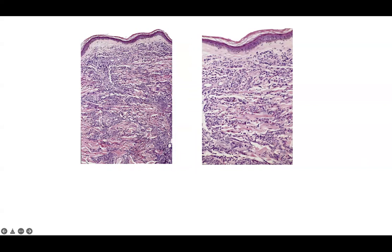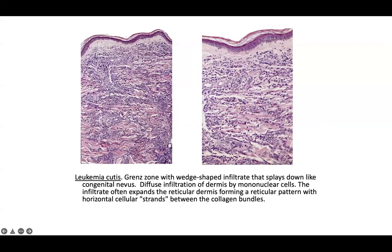This next case has a similar interstitial growth pattern. However, the cells are small and hard to characterize on high power. Importantly, there is uninvolvement of the superficial dermis. With a neoplastic lymphoid population, you'll often have uninvolvement of that top layer — a grenz zone — and a wedge-shaped infiltrate that splays down, somewhat like a congenital nevus. This is leukemia cutis.